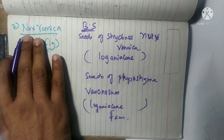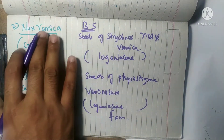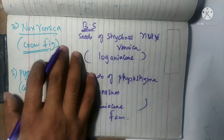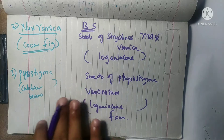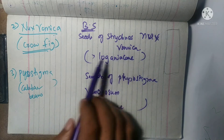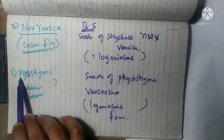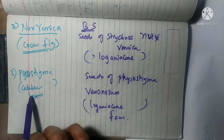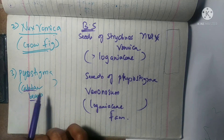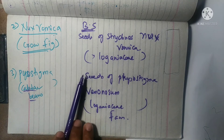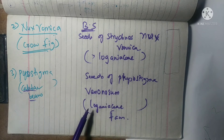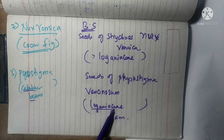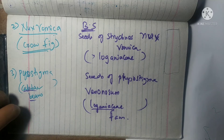So Nux Vomica, its synonym is strychnine, and it is obtained from the seeds of Strychnos nux-vomica. Its family includes Loganiaceae. Next one is Physostigma — its synonym is calabar bean, its biological source is the seeds of Physostigma venenosum, and its family also includes Loganiaceae.